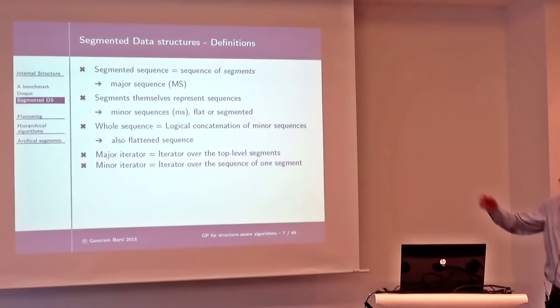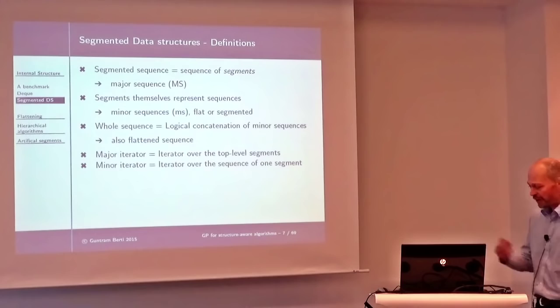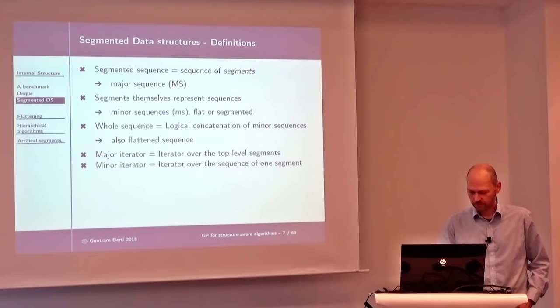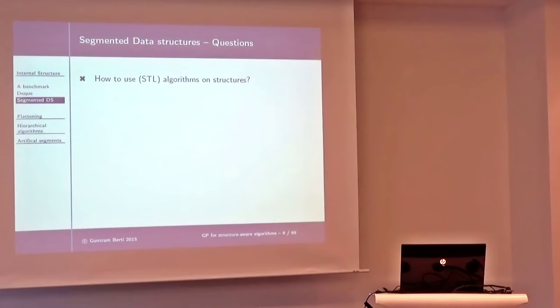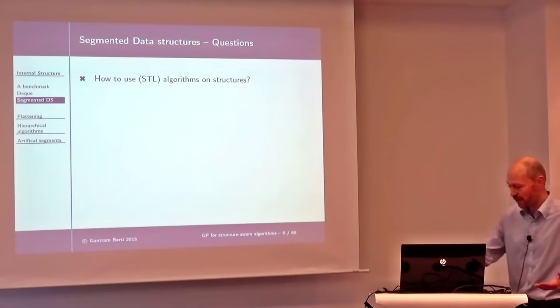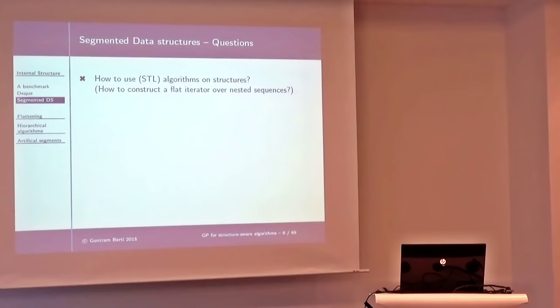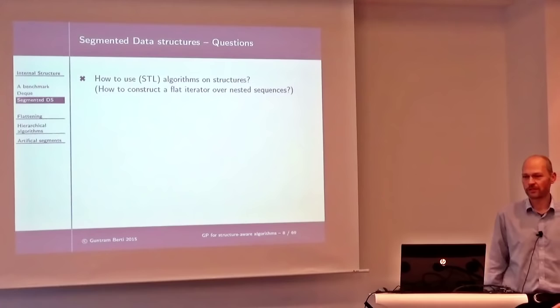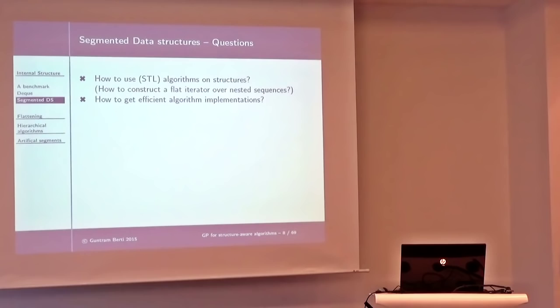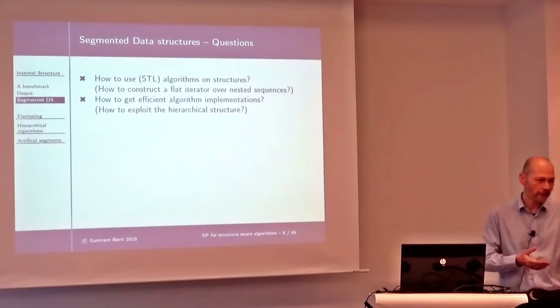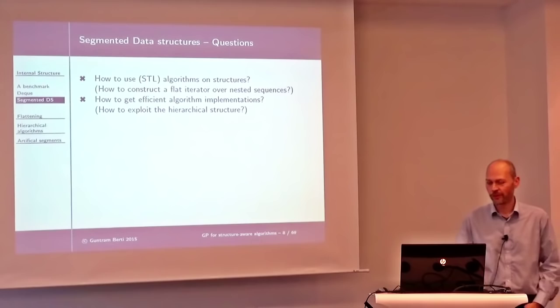By extension, I call the iterator over the top-level sequence the major iterator — the list iterator in our example — and the minor iterator iterates over the small vectors. Now we have essentially two problems. First: if I have a vector of vector or list of vector, how can I use an STL algorithm on that at all? For the deque, it's already been implemented via its iterator, but for others we don't have such a flat view. So we need a flattening or flat iterator. Second: how to get efficient implementations of algorithms on these nested sequences — we must exploit the hierarchical structure. In the first part I'll deal with question one, in the second part question two, and the third part brings them together.